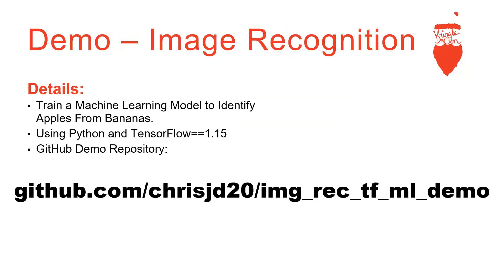What I'm going to do now is demonstrate image recognition through machine learning. We're going to train a model to identify the difference between apples and bananas in PNG files, using Python and TensorFlow 1.15. I have a GitHub repository set up with all of these files, so if you want to try this yourself, just go to that link.